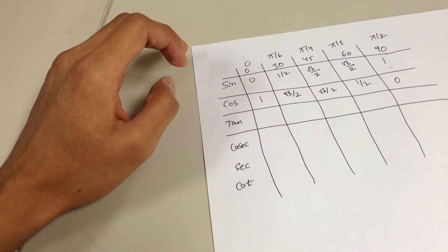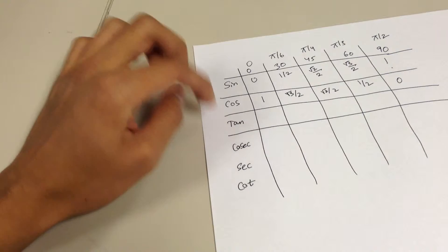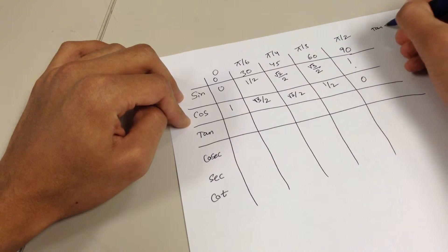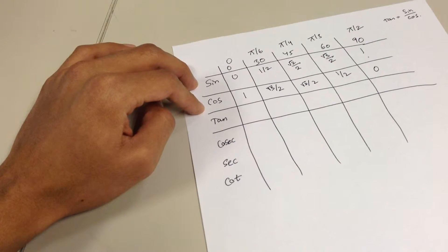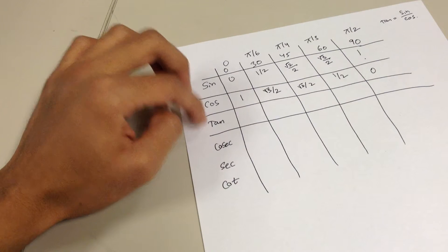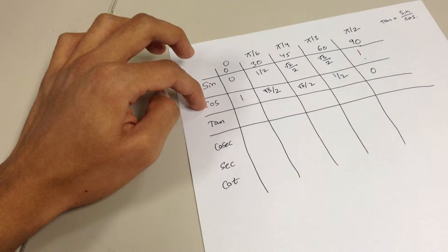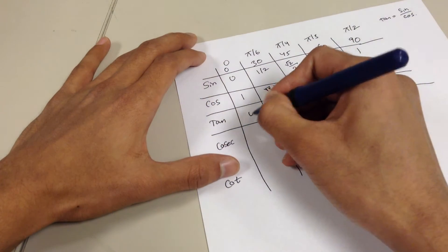Now before we go to tangent, what do we know about tangent? How can we write tangent in terms of sine and cosine? Well, as you recall, tangent is the same as sine over cosine. So what do you think I have to do if I want to find tangent of zero? Well, all I do is I take sine of zero and then divide it by cosine of zero. So all I do is just zero divided by one, I get a zero.